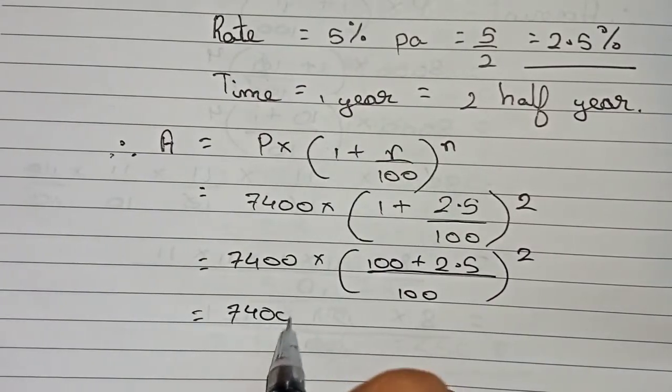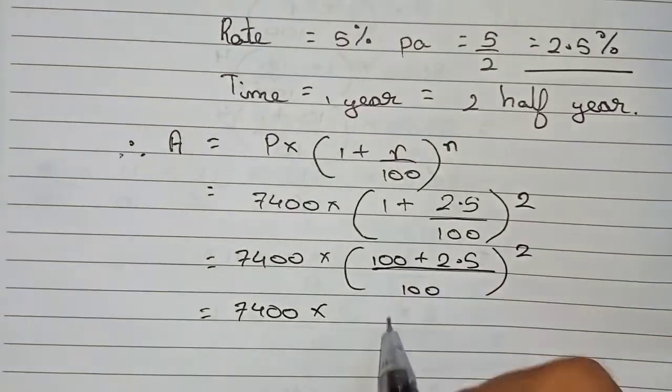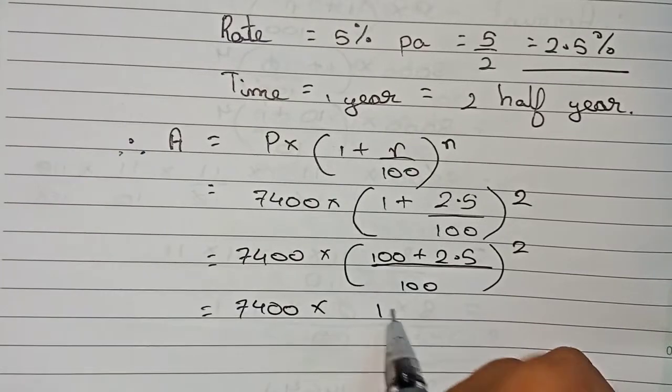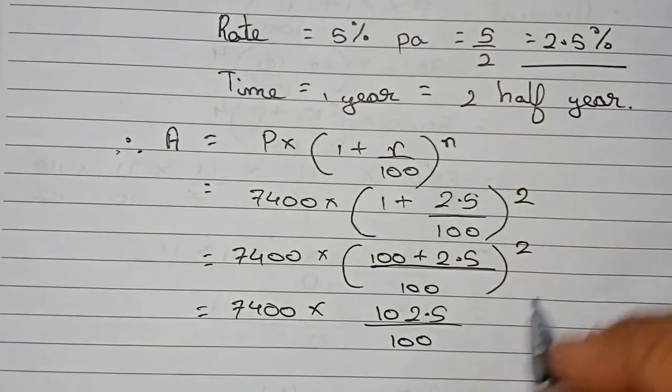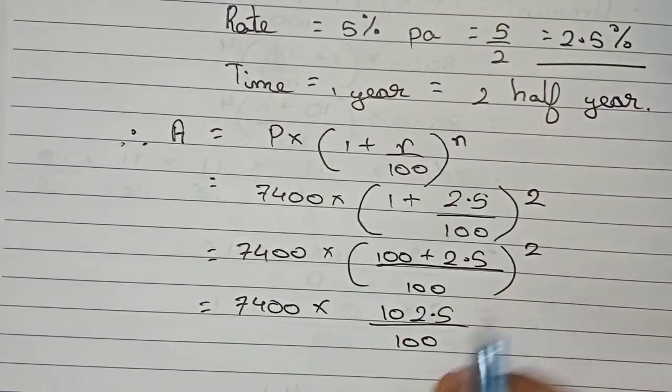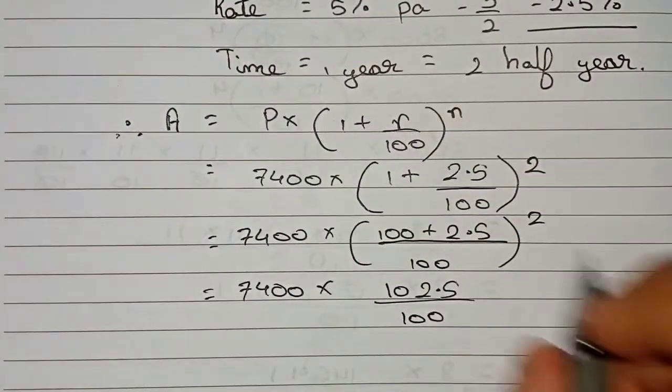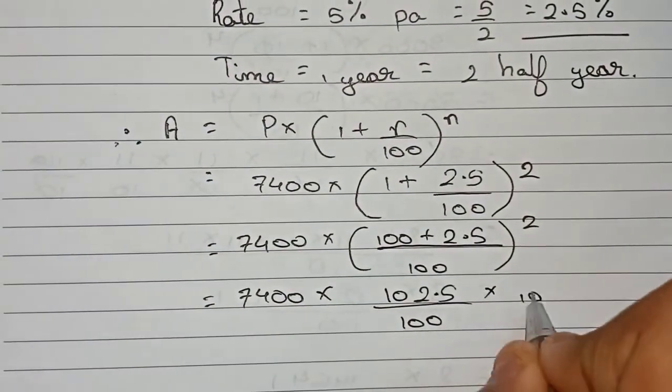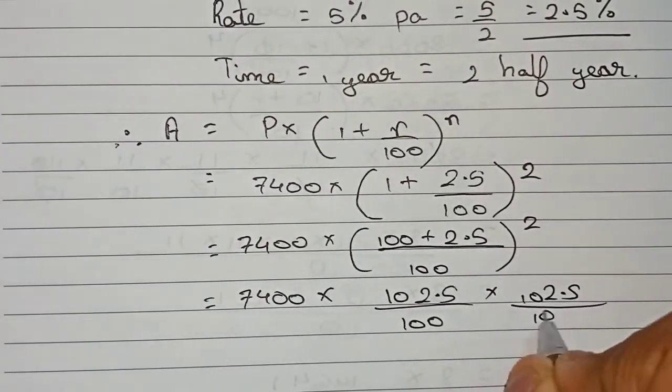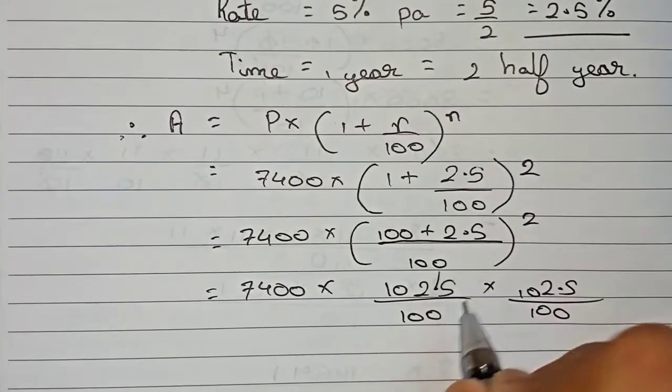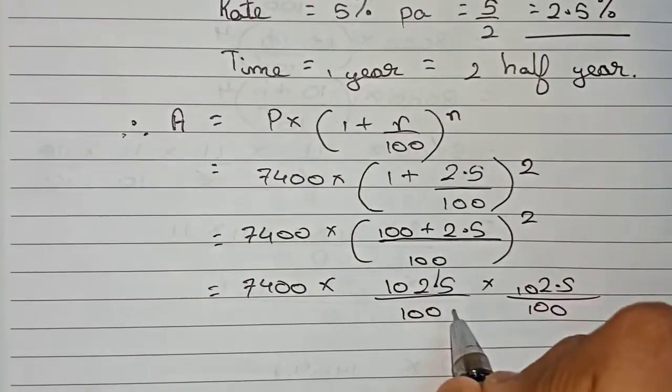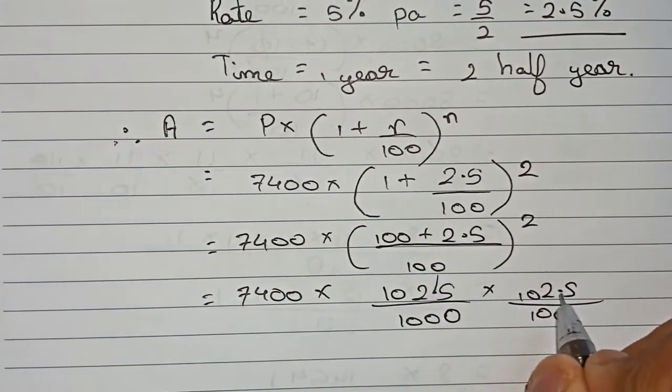It becomes 7400 × (102.5/100) to the power 2, which means this will be written two times: 7400 × (102.5/100) × (102.5/100). Now remove the decimal point by adding zeros.